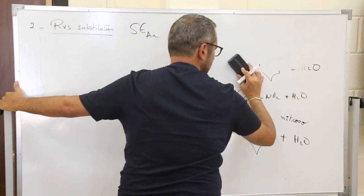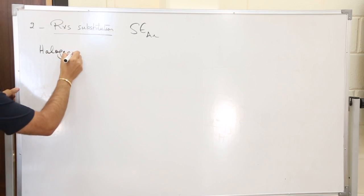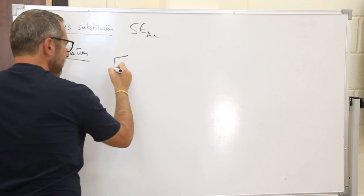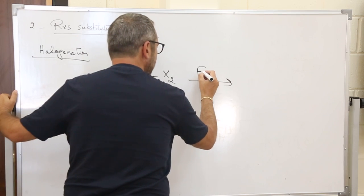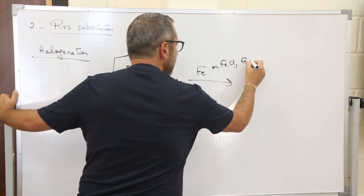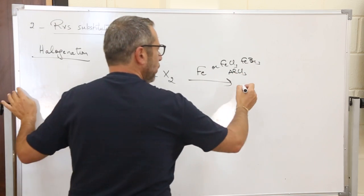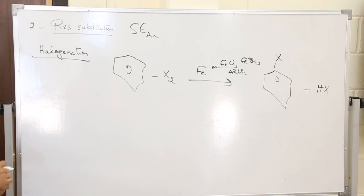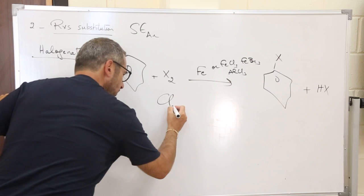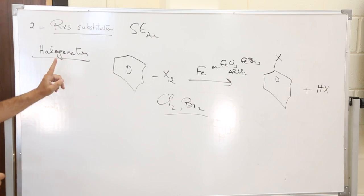Now halogenation: we replace the H of benzene by a halogen. We take benzene and X2, usually with a catalyst of iron (Fe), FeCl3, or FeBr3. We can also add AlCl3. We obtain benzene-X plus HX. Pay attention: this reaction of halogenation is only done with Cl2 and Br2. We cannot introduce iodo (I) or fluoro (F) via halogenation — we will see how to introduce them later.